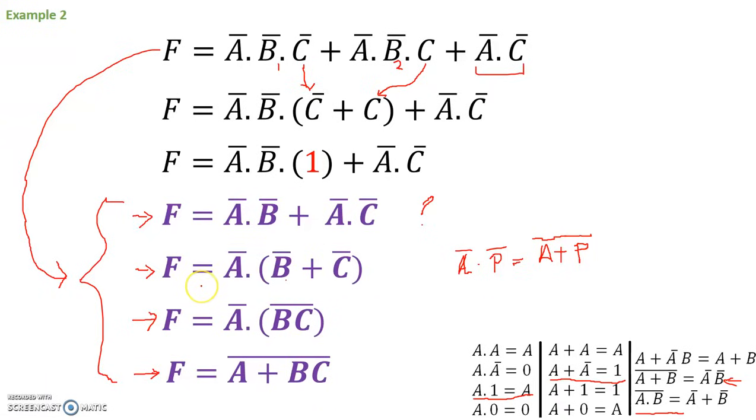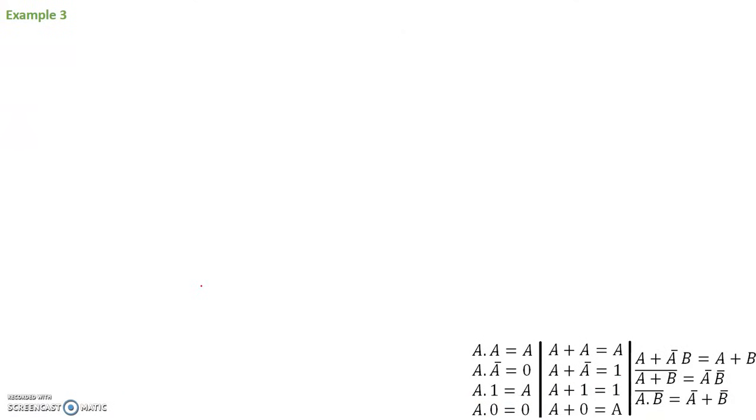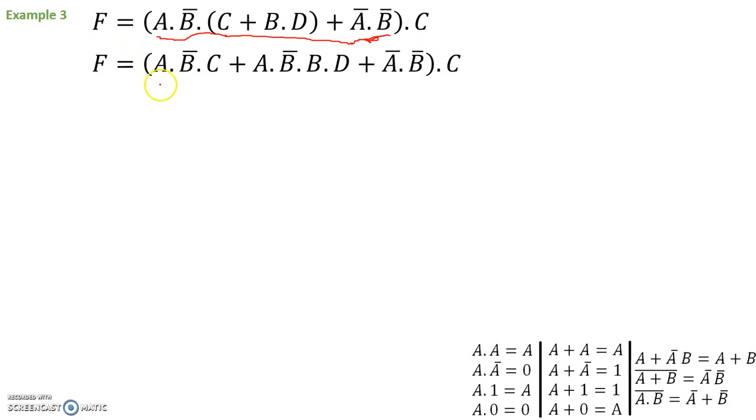Let's do one more exercise. In this final example, we'll take a look at the following Boolean expression. It looks just a little more complicated than the one we started with, but it's not. Here you go. F is equal to A, ended with NOT B, ended with, in parentheses we have C or BD, or NOT A, NOT B, and this whole thing is being ended with C. Let's take a look. What do we do here? Let's do the first thing.